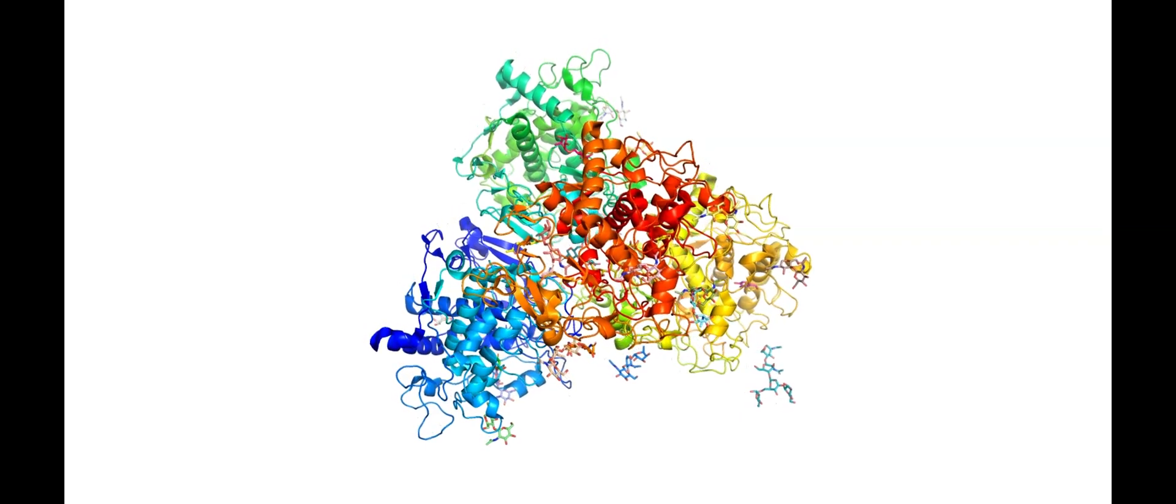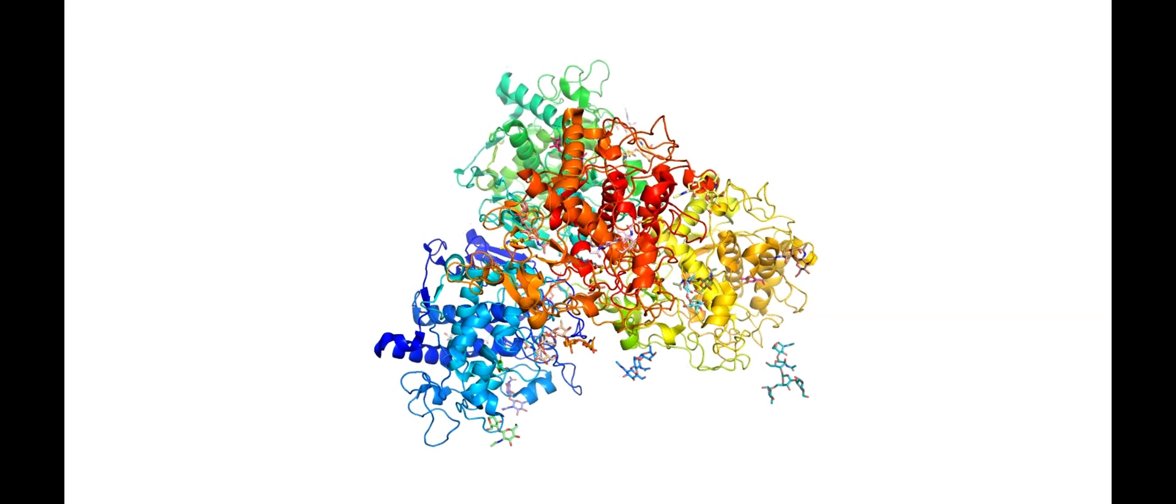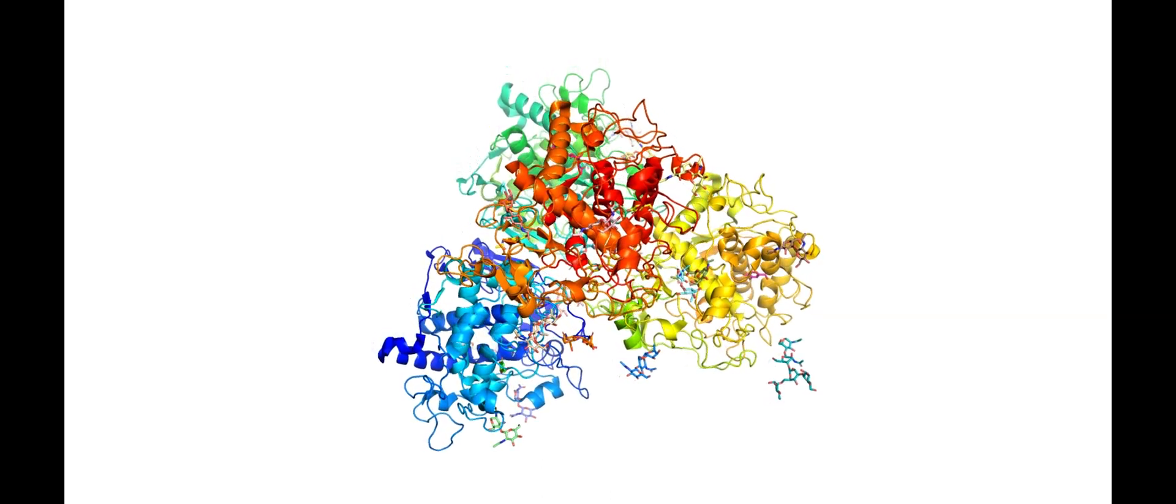Melanin is a substance that determines the color of our hair, skin, and eyes, and is produced by specialized cells known as melanocytes.